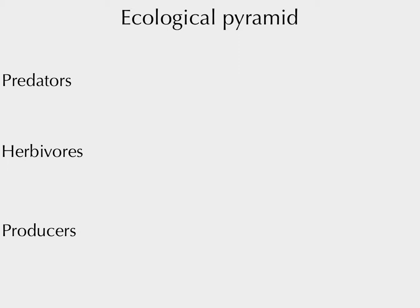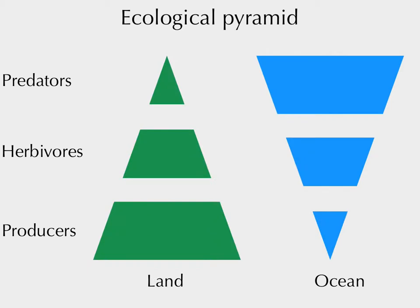First, a question: who knows what the ecological pyramid is? The energy pyramid — plants are at the bottom, then herbivores, then predators that eat herbivores. On land we see this distribution: lots of plants, some herbivores, and a few predators. The land is green, and on land you typically see this kind of distribution.